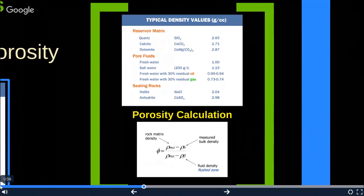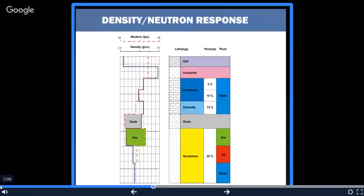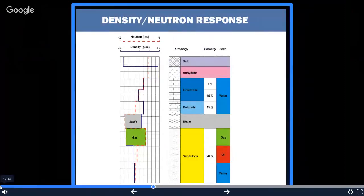Typically density values of the reservoir matrix, pore fluids and sealing rocks are given on the table. The porosity calculation can be achieved by the following formula. The density neutron response will give us the lithological interpretation, as for the shale you see here, and the gas, where we have the minimum values on the neutron and the minimum values on the density.